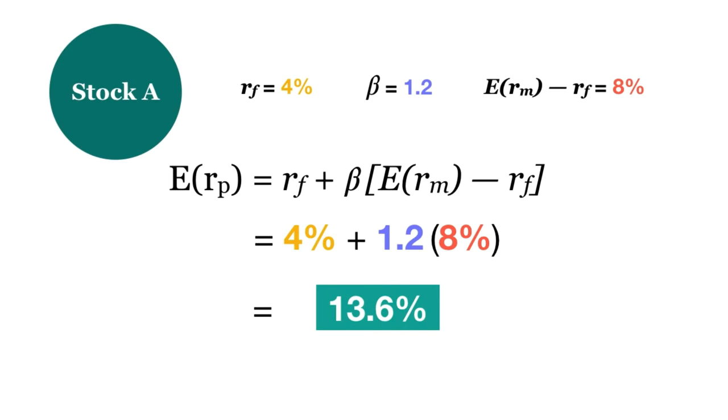Let's try another question, that's a little bit harder. Stock B has an expected return of 10%, with a beta of 0.8. Stock C has a beta of 1.3. The risk-free rate is 4%. What is stock C's expected return? Pause the video again, try this problem yourself, before watching the solution.